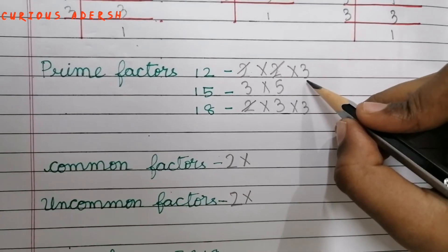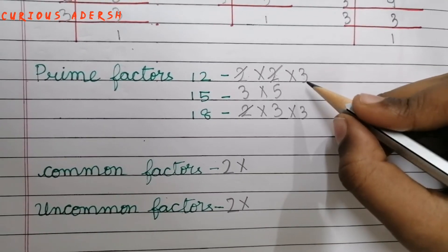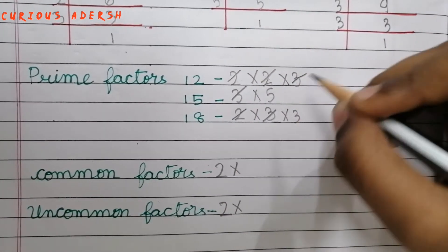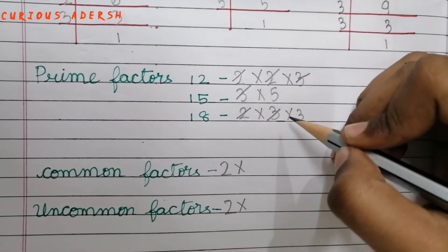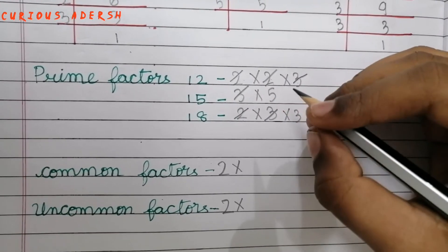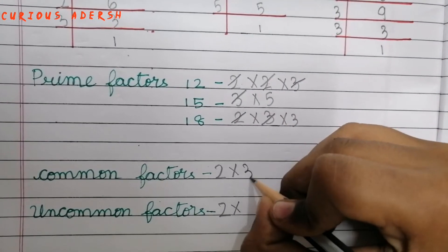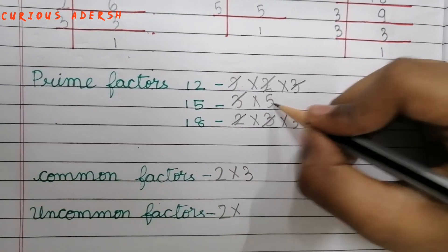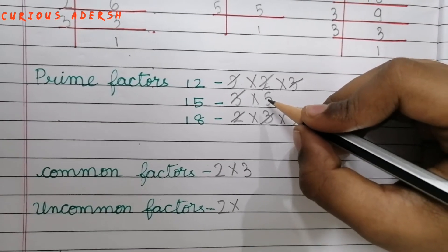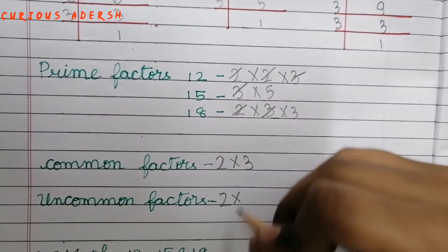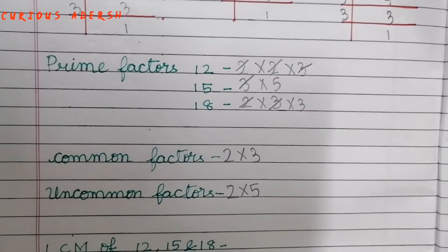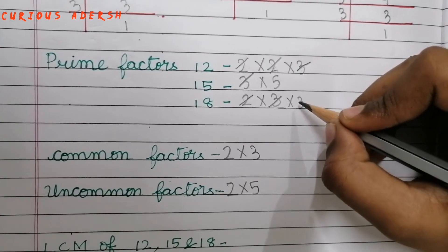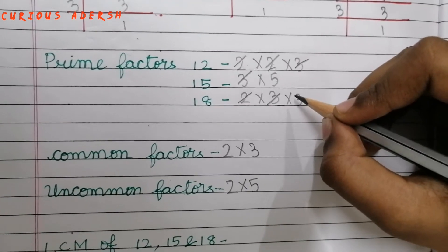Let's move to the next number, 3. This 3 has partners, so I've striked out all the 3s and I'll write only one 3 under common factors. Next, 5 — this 5 doesn't have any partners, so I'll write it under uncommon factors. The next 3 also does not have any partners, so I'll write it under uncommon factors.